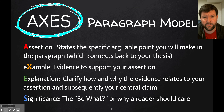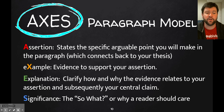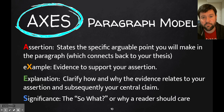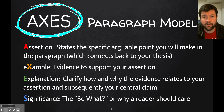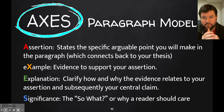We have the Assertion — the A — and then it's one of those acronyms where you don't use the first letter. Then we have the eXample, and then we have the Explanation and the Significance. The assertion is where you're going to state a specific, arguable point. This isn't just some broad idea like 'abortion is bad' or 'we should increase funding for the Postal Service,' but rather much more specific than that — like 'we should increase money for the Postal Service in order to help maintain local economies.' We're getting into a more finite, measurable way of looking at this, dialing it down to some very specific points.